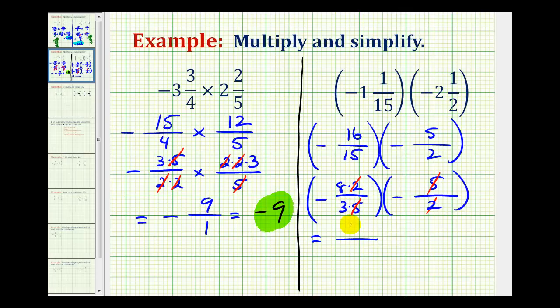The numerator would be eight, and the denominator would be three. So this is our simplified product, but it is an improper fraction.